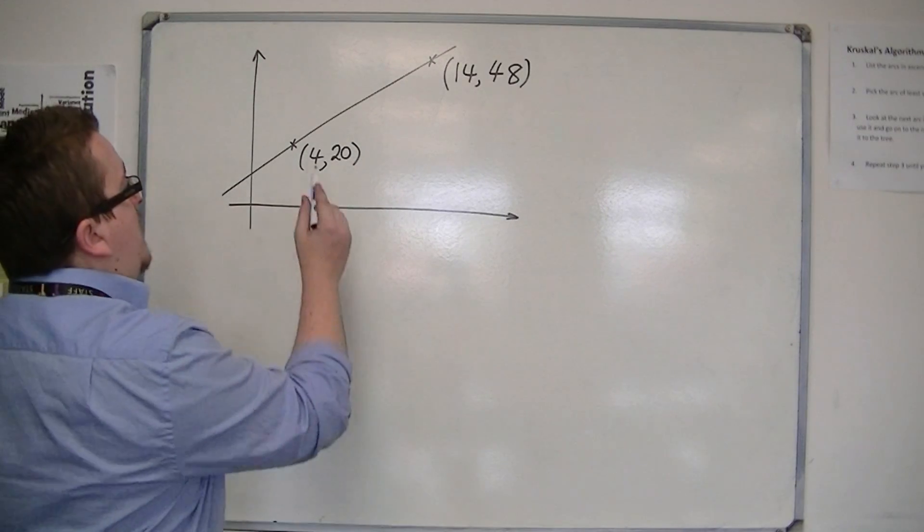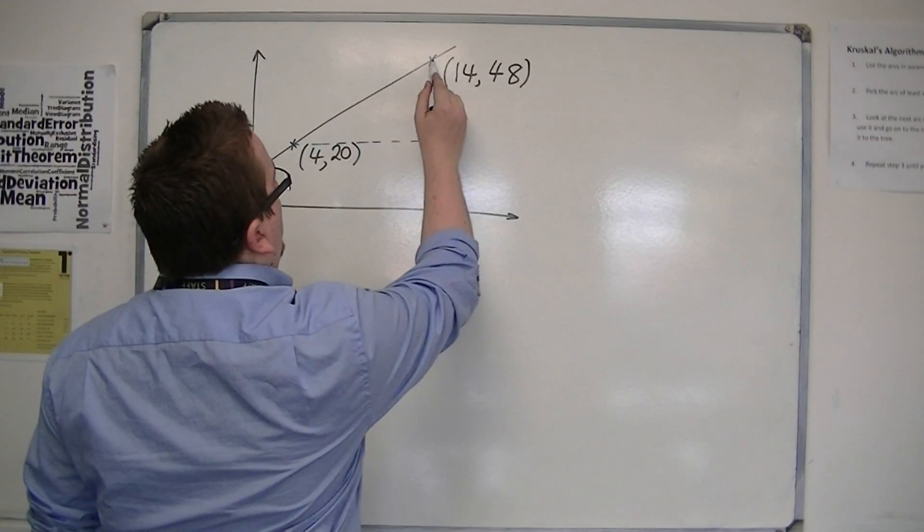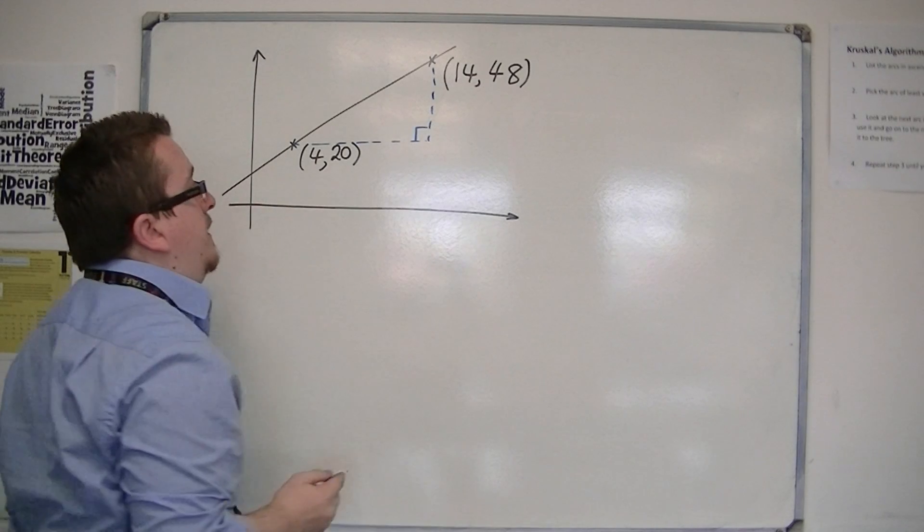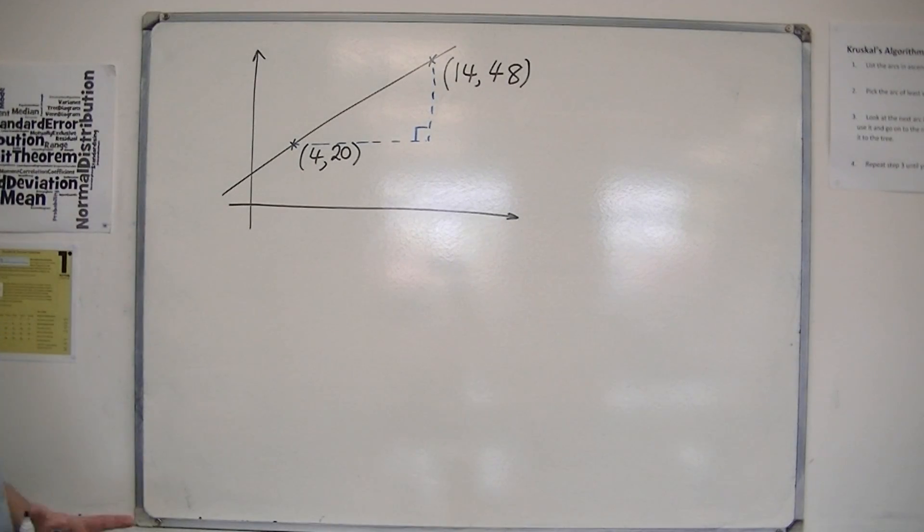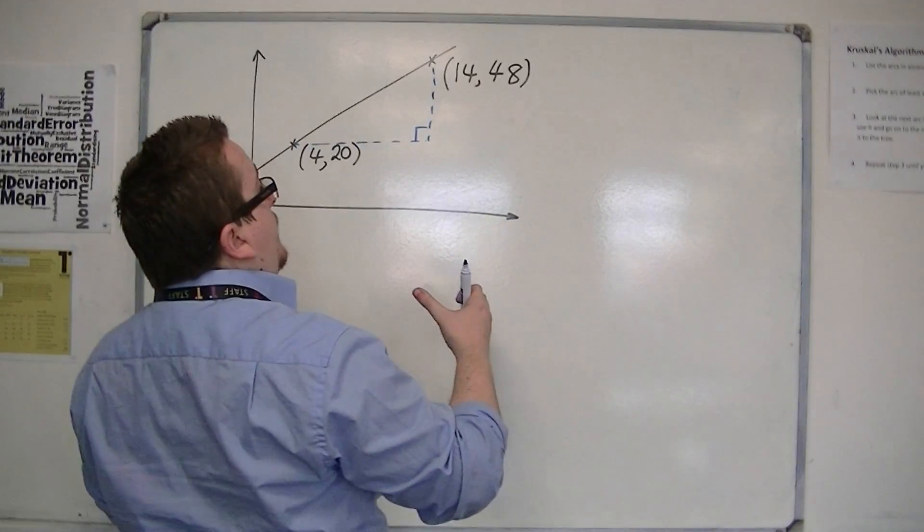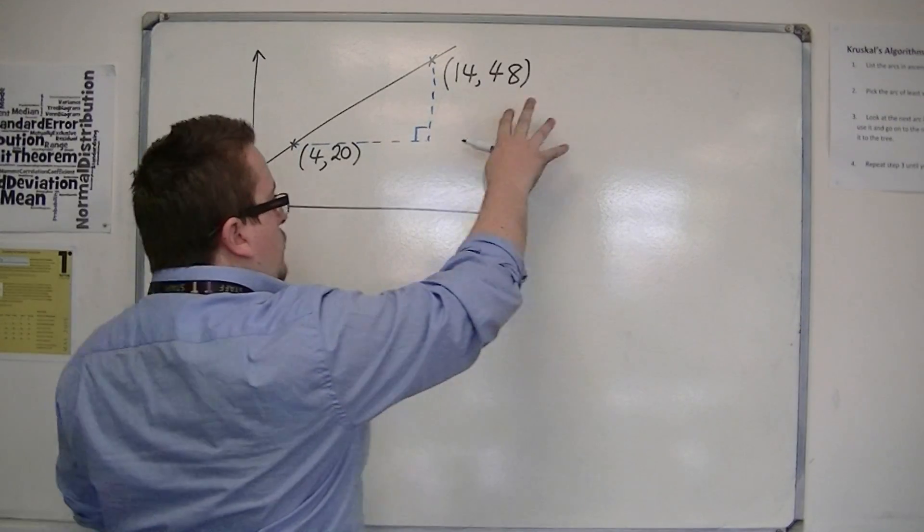First thing you really want to do is determine the gradient of the line. The best way to do that sometimes is to draw yourself a little right-angled triangle.